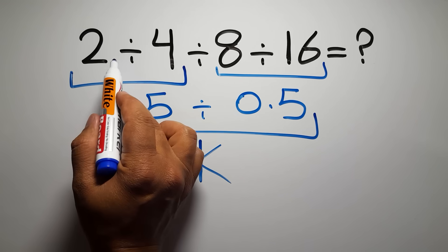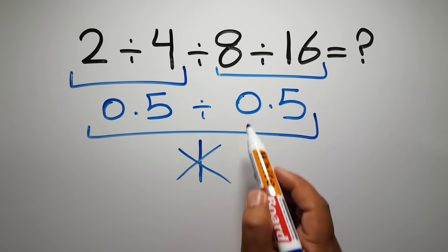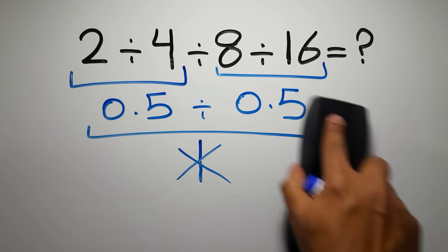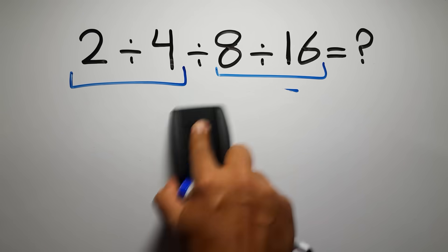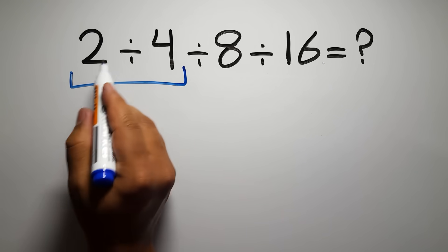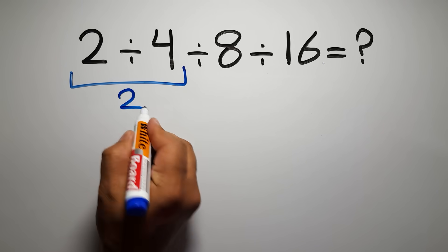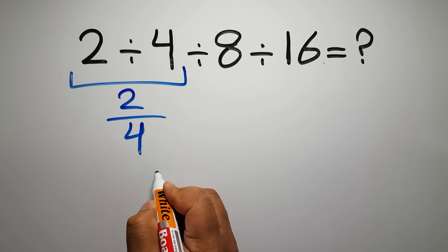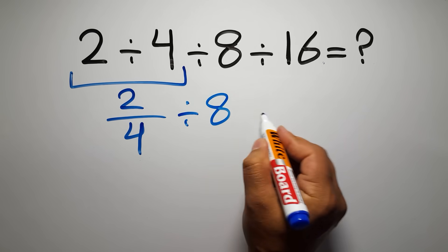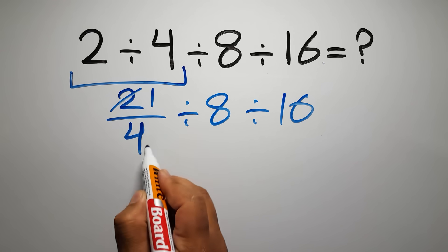So first we have to do this division, then this division, and finally this division. If we do this division before this division, it is wrong. So first: 2 divided by 4. We can write 2 over 4, so 2 over 4 divided by 8 and divided by 16.